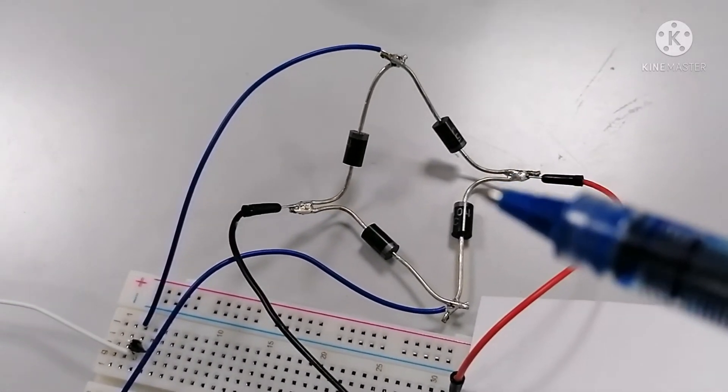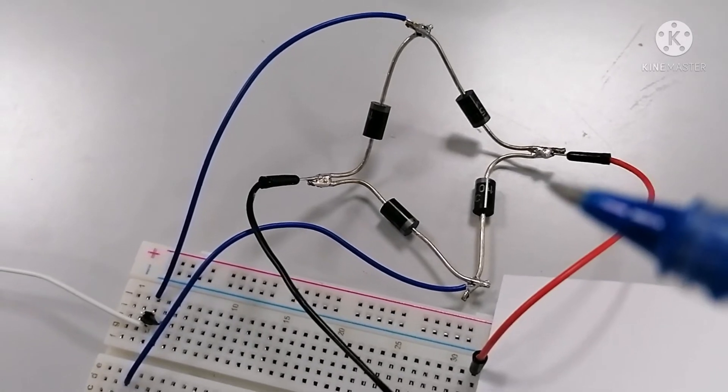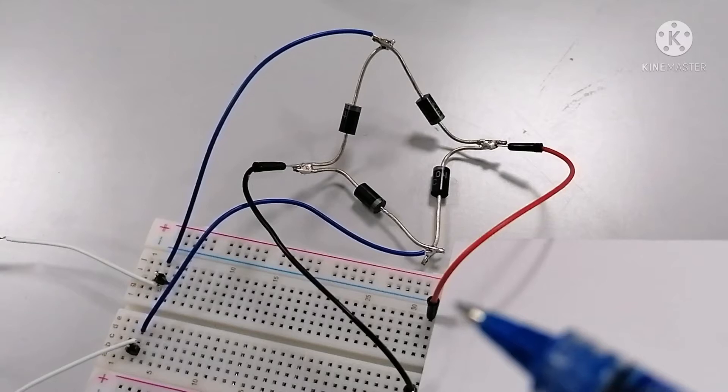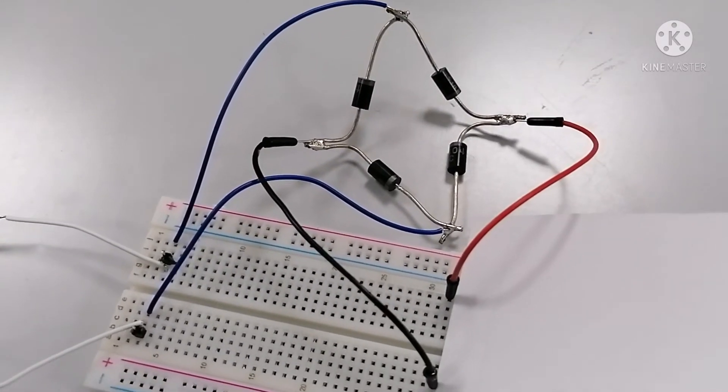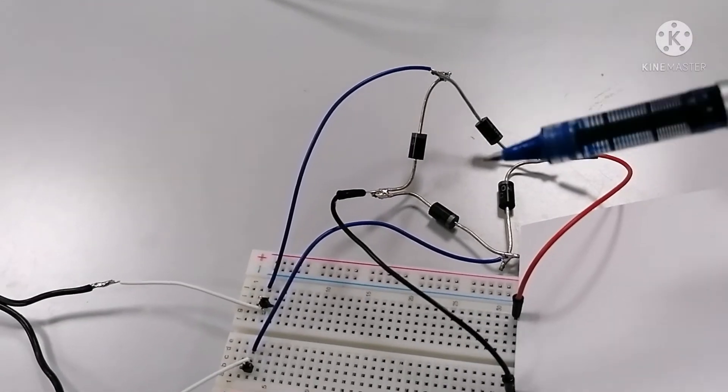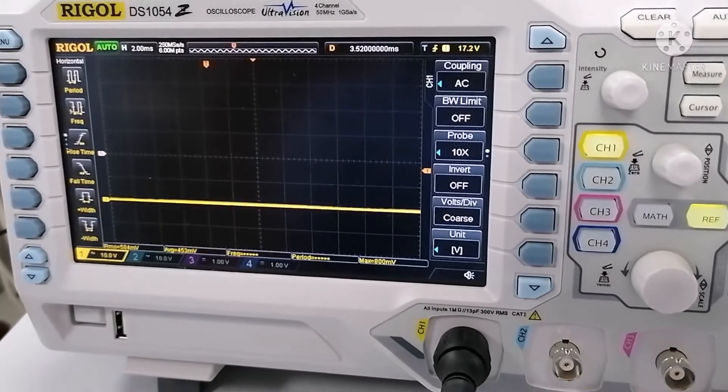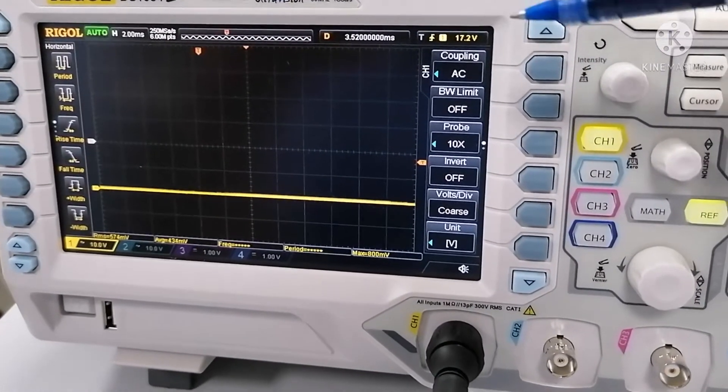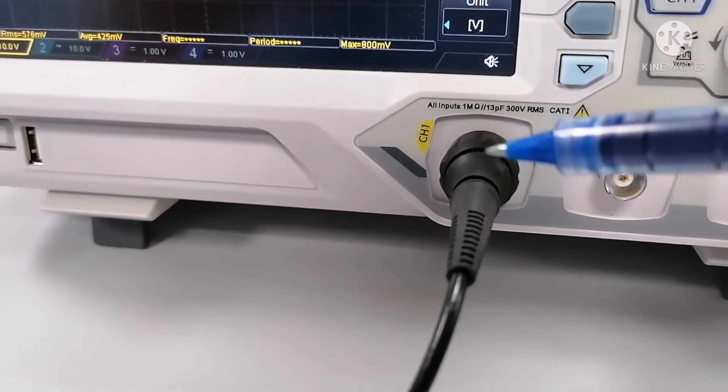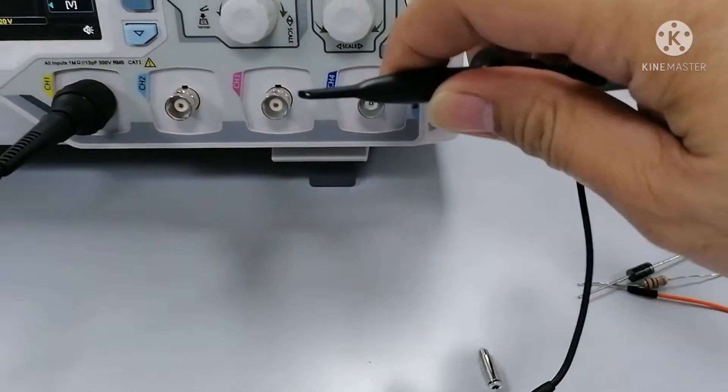Please take note that a bridge rectifier will convert AC voltage to DC voltage. The output is already DC and I will show it to you through the oscilloscope. I set my oscilloscope into AC coupling and I will use channel one to test our component. This is the probe of our oscilloscope.